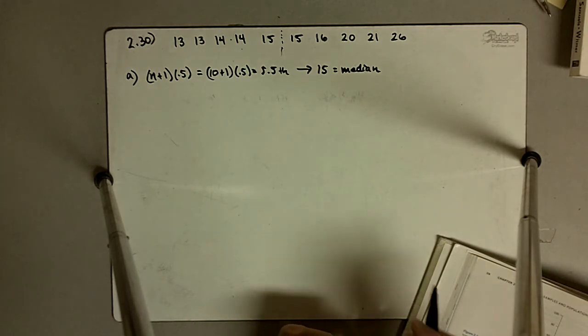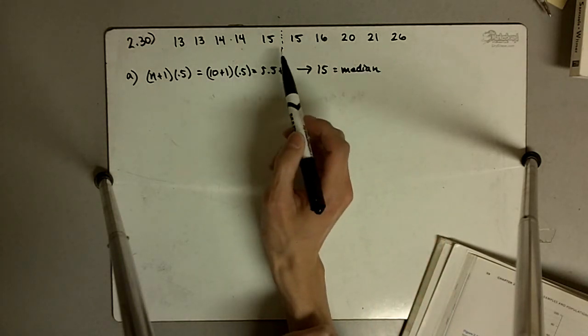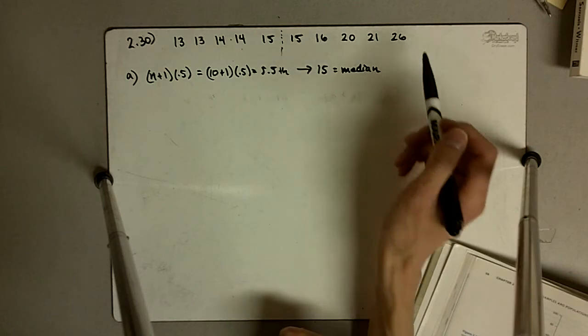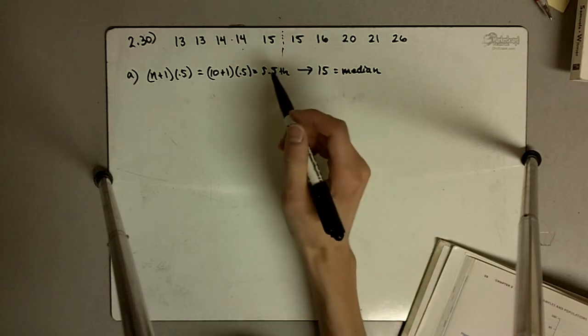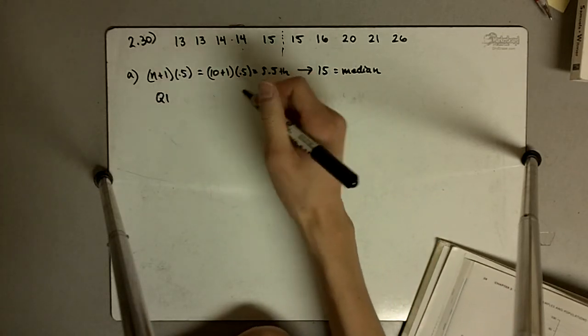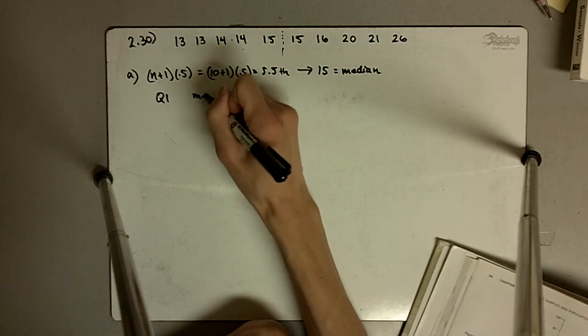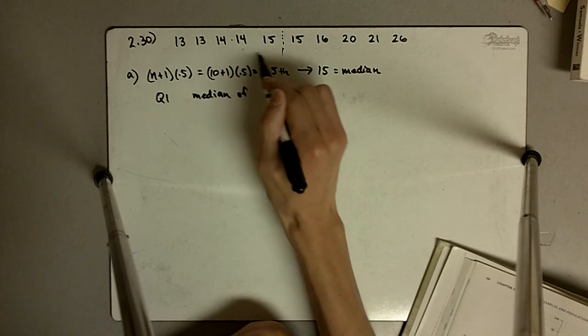To find the quartiles we then find the median of the lower half for the first quartile and we find the median of the upper half numbers for the third quartile. So Q1 is going to be the median of these lower numbers.